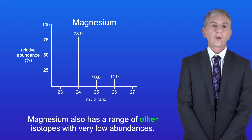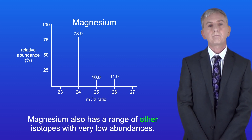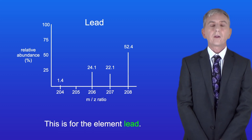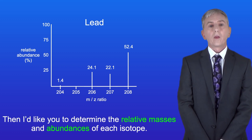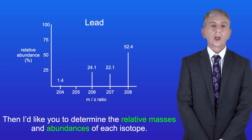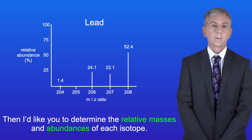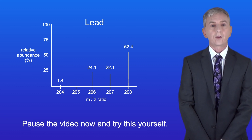Magnesium also has a range of other isotopes with very low abundances. Here's one more mass spectrum for you to interpret — this is for the element lead. Work out how many lead isotopes are shown, then determine the relative masses and abundances of each isotope. Pause the video now and try this yourself.